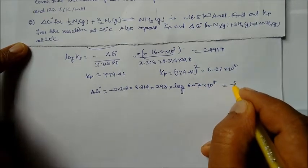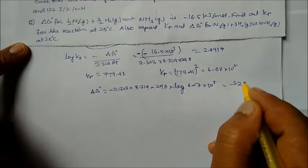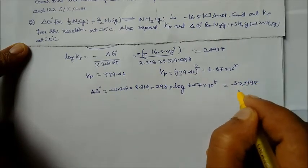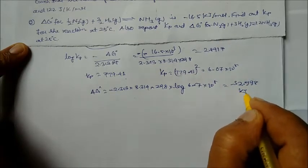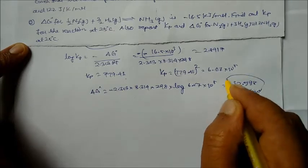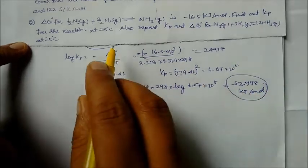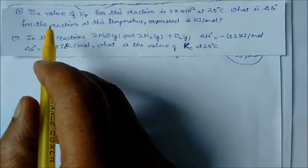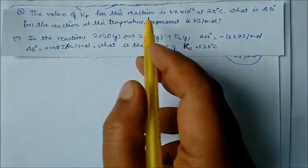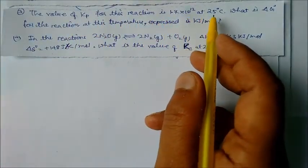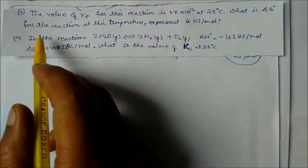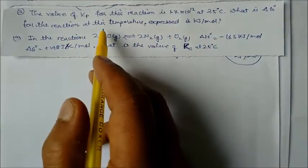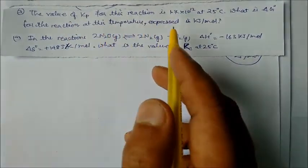Solving this gives ΔG° = −32.998 kJ/mol. This is the standard free energy for the doubled reaction. The Kp of this reaction is 6.07 × 10⁵ at 25°C.